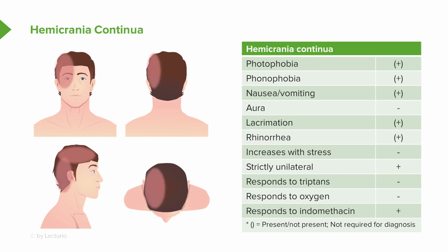Cluster differs from hemicrania continua. Hemicrania continua is a unilateral headache, just like cluster. We can see some migrainous features — photophonophobia, nausea, vomiting — though not as prominent as migraine. It is an autonomic cephalalgia, so patients have lacrimation and rhinorrhea, and it is strictly unilateral. Hemicrania continua differs because it is indomethacin responsive, and that indomethacin response is an important diagnostic and therapeutic intervention for these patients.